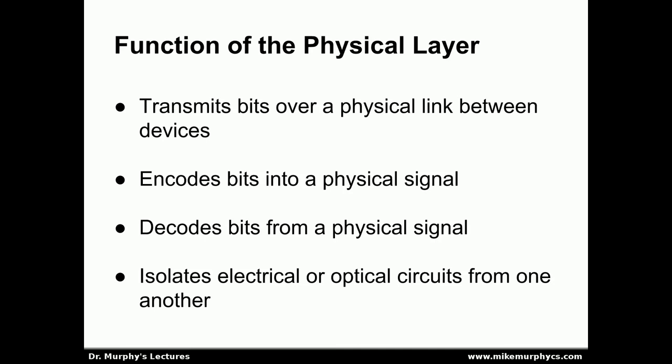It's also important for the physical layer to isolate different electrical or optical circuits from one another. In the case of an electrical circuit, such as with an Ethernet network, a malfunctioning device on one part of the network should not be able to bring the entire network down by means of a short circuit or some other type of electrical malfunction. So the physical layer also needs to perform what's called galvanic isolation, keeping different circuits isolated from each other.